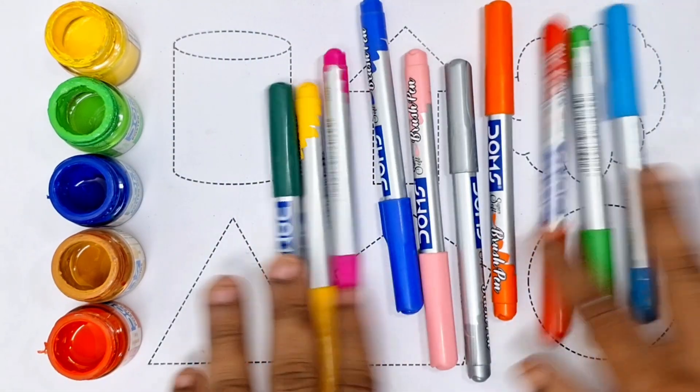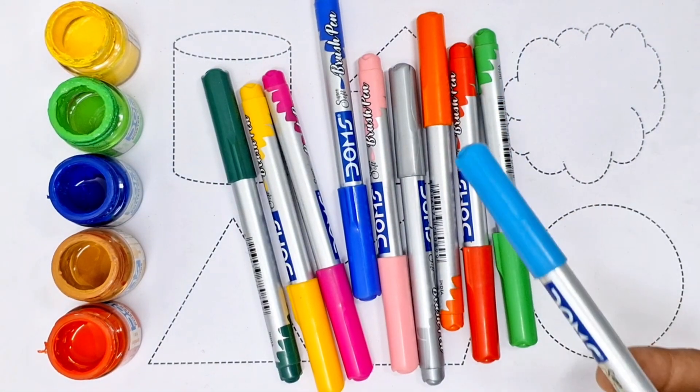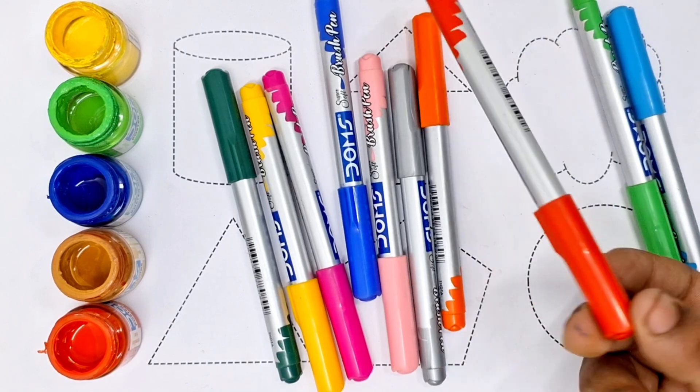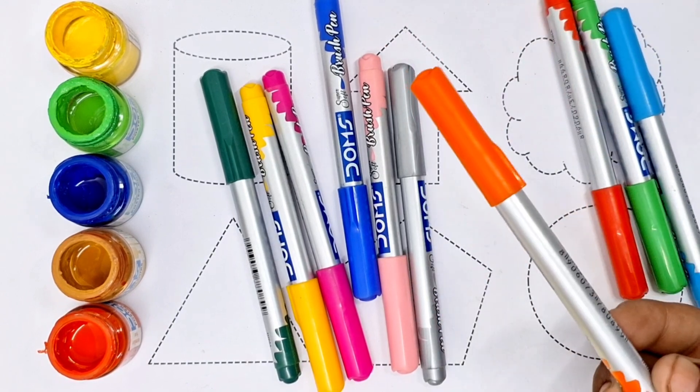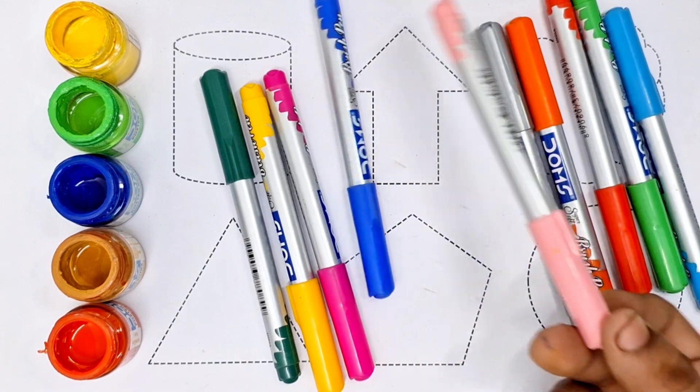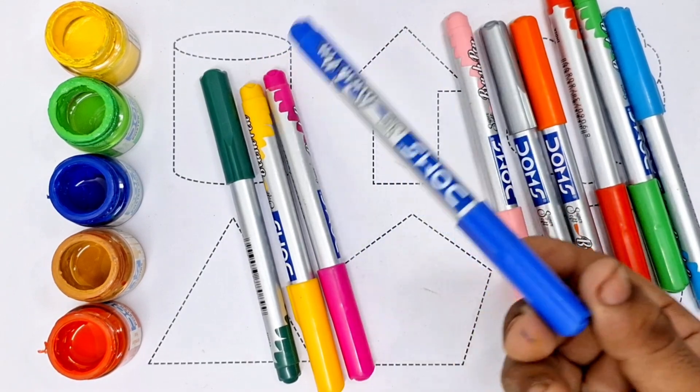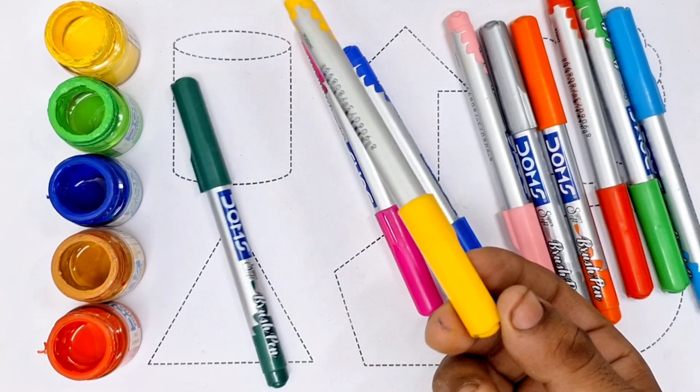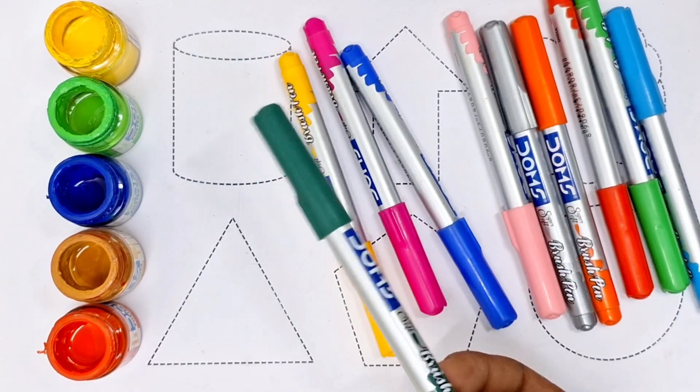Hello kids, colors name: sky blue, parrot, red, orange, silver, light pink, blue, pink, yellow, green.